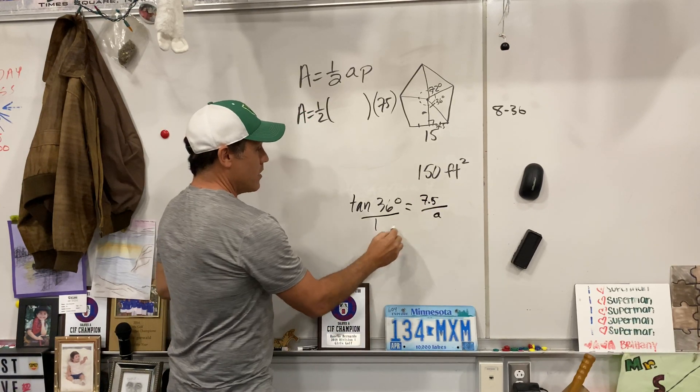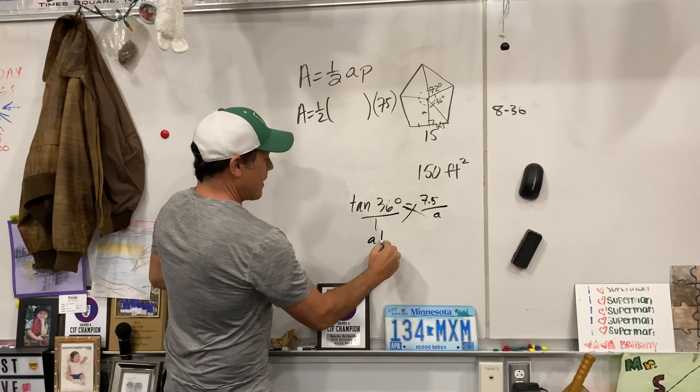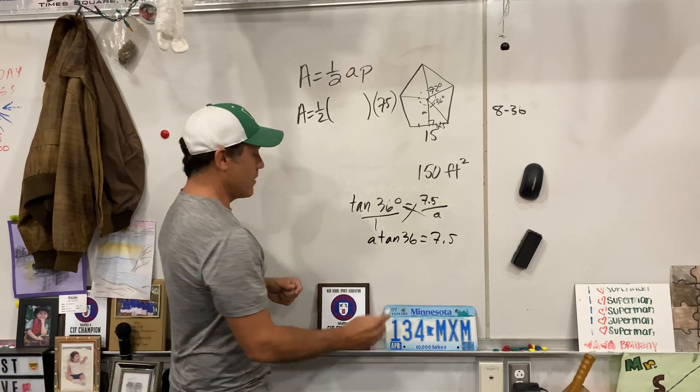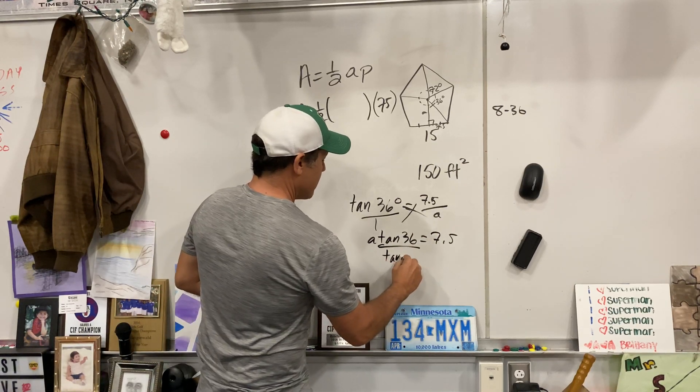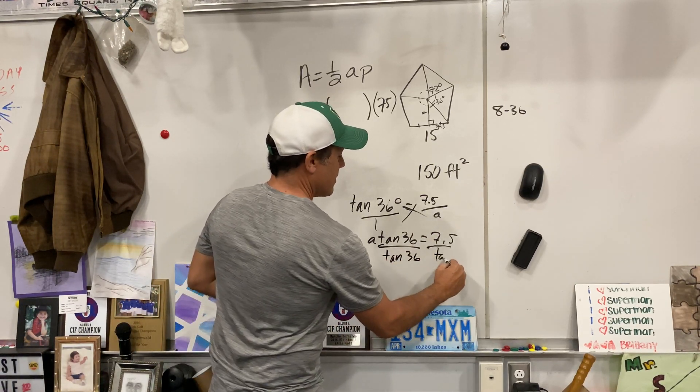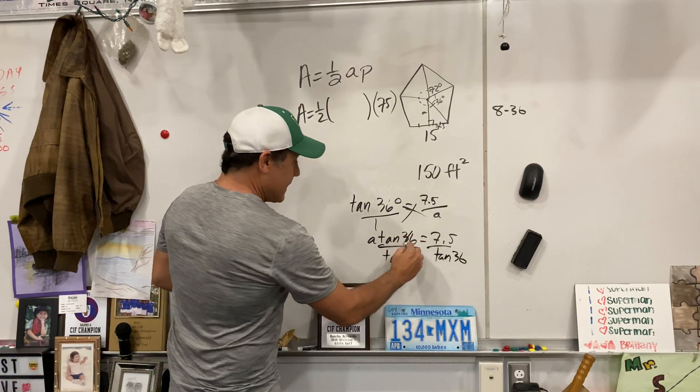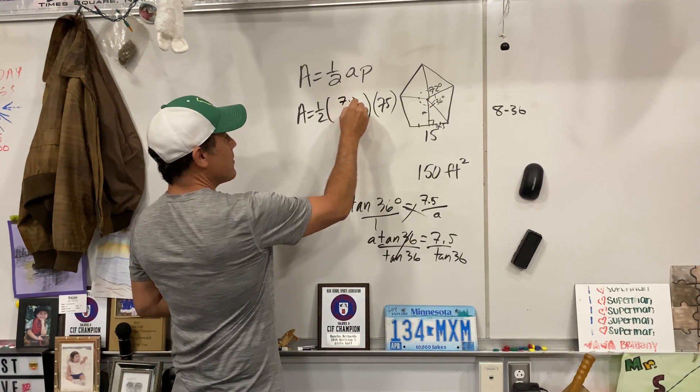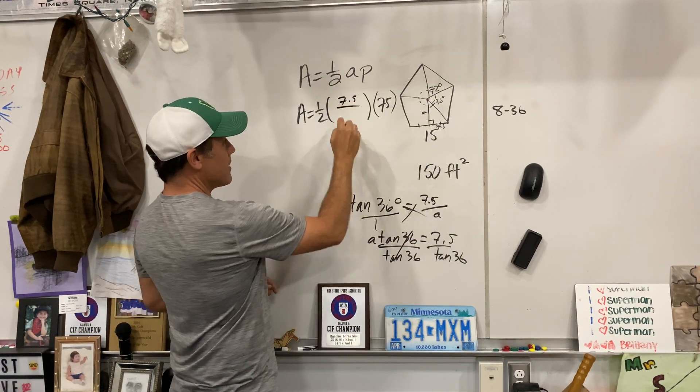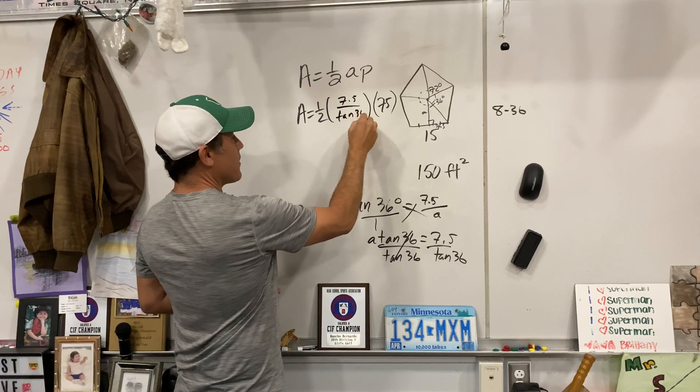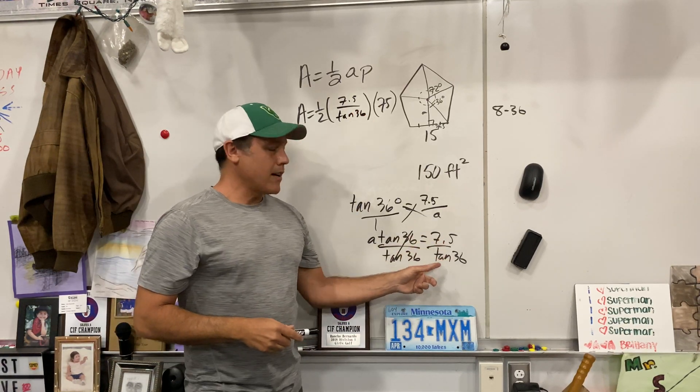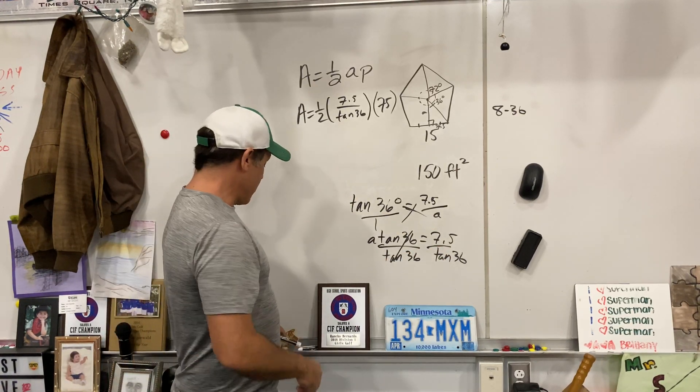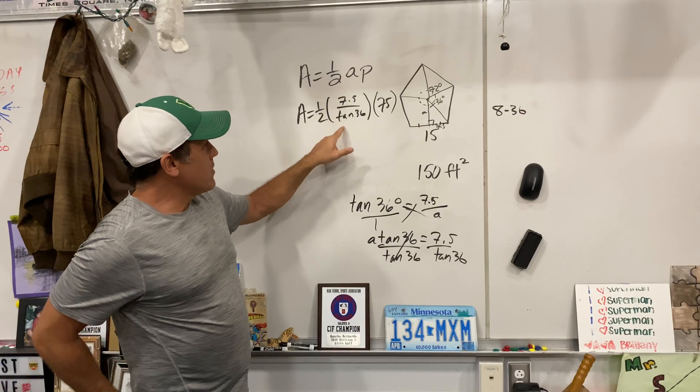Remember, put this over 1. Do a little cross multiplication action. You got A tangent of 36 equals 7.5. You still with me? Divide both sides by tangent of 36. Boom. So the apothem is equal to 7.5 divided by tangent of 36. So I don't want to put this in the calculator right now and round it and put a rounded answer and then round again at the end. So you got to be careful.